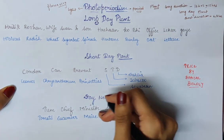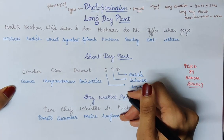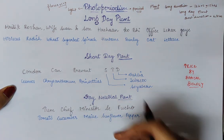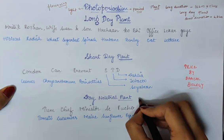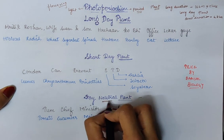And last is the day neutral plant. We can provide it less amount of light or more amount of light — for less duration or for more duration. In both cases it will flower. That's why it is called neutral.